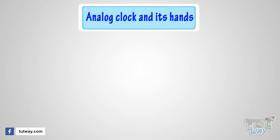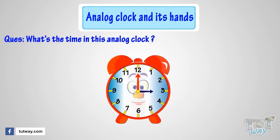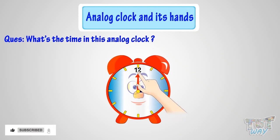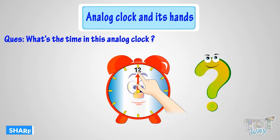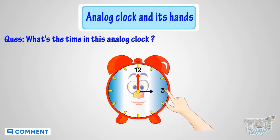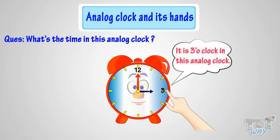Can you tell me what's the time in this analog clock? Let me help you do that. When the minute hand is at 12, it is time to the hour. But to which hour? The hour hand tells the hour, and the hour hand is pointing at 3. So, it's 3 o'clock.